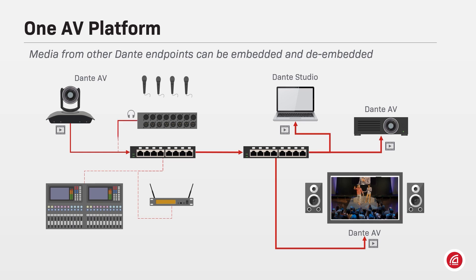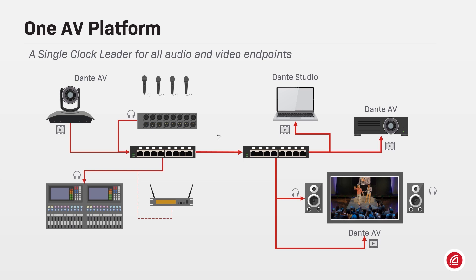Audio from other Dante endpoints can be embedded with the image coming from a Dante AV transmitter and then sent to a destination such as a Dante AV hardware or software. In the same way, audio from a Dante AV source can be de-embedded, processed in real-time by another Dante endpoint and then re-embedded or sent to another destination on the network.